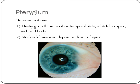On examination, you will see a growth on the nasal or temporal side of the cornea. It has an apex closer to the cornea and a body on the conjunctiva. Once there is a pterygium, the surface of the cornea is irregular, so the tear film gets disturbed. This can cause deposition of iron in front of the apex of the pterygium, which is called Stoker's line.